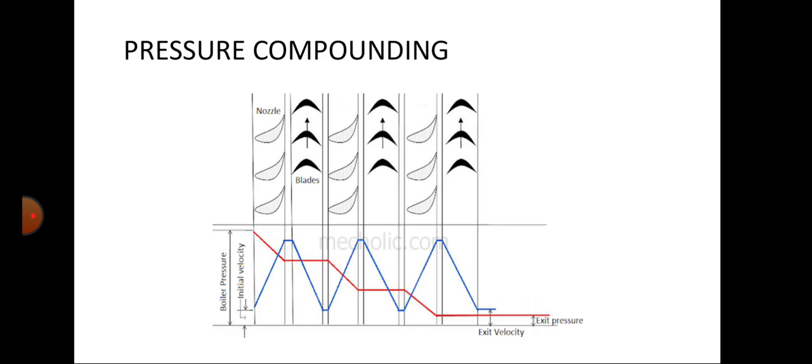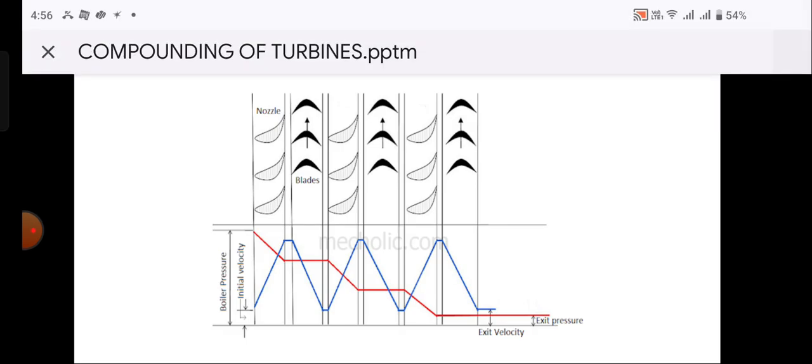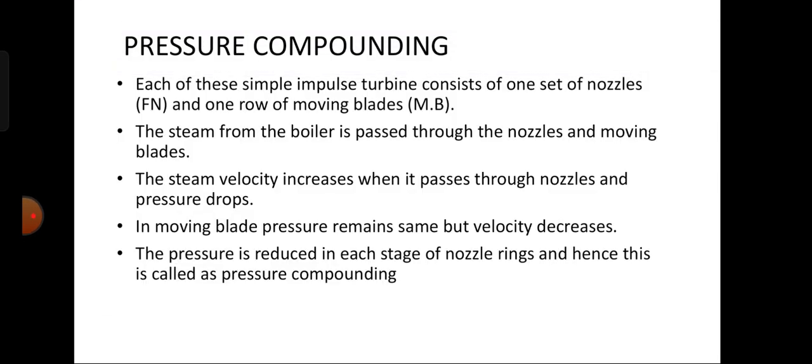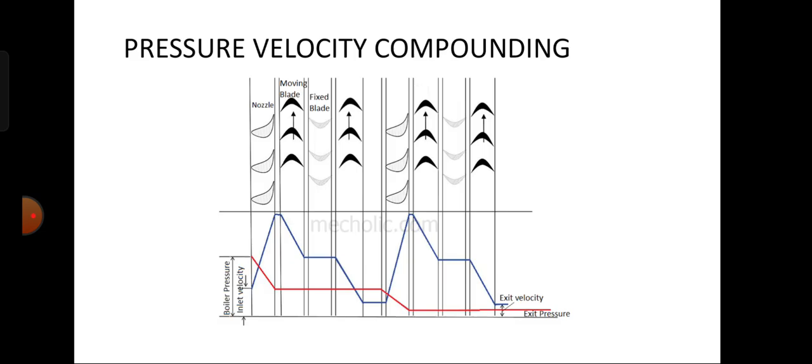It is to be noted that every time steam enters the nozzle, the pressure gets decreased gradually by the end of the stage. This is known as pressure compounding. As seen in the red line, it decreases gradually at every set of stages. The pressure is reduced in each stage of nozzle rings, and hence this is called pressure compounding.